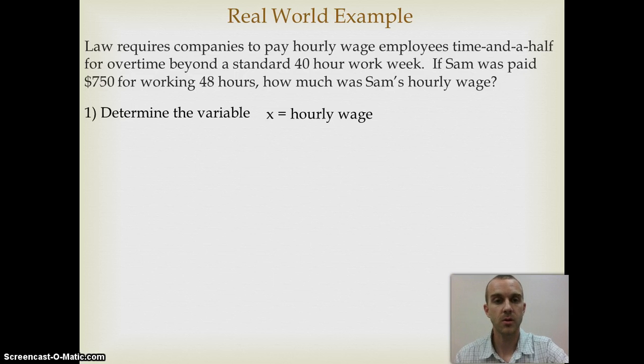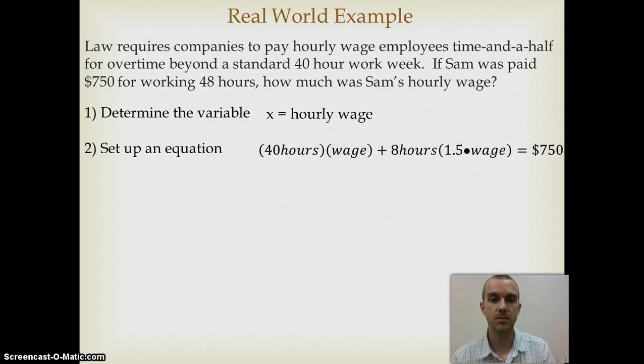We also know, as we set up the equation, that there's two parts to this. There's the part, the 40 hours, and whatever that hourly wage is. And then there's the eight hours, which is that time and a half. So if I wanted to set that up as an equation, I'd have my 40 hours times my standard wage plus my eight hours at 1.5 times the wage. And that 1.5 is the time and a half. And we know all that has to add up to $750.